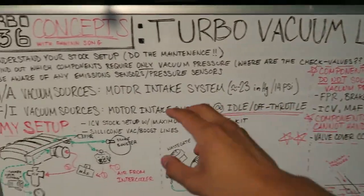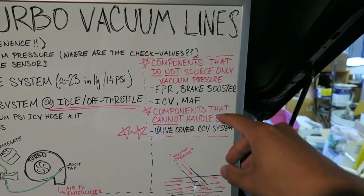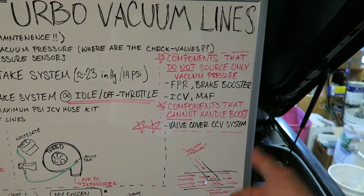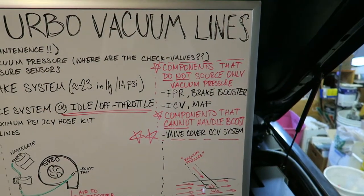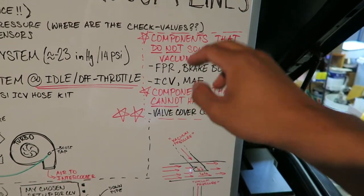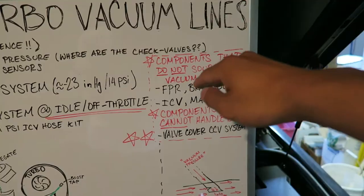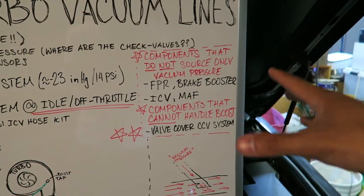Going off of what I just said about forced induction systems versus NA motors, these are the components that do not source only vacuum pressure, meaning they either have a check valve or you can boost these components. So the fuel pressure regulator, the brake booster, the idle control valve, and your MAF setup can be hooked up just like they are in a stock setup. Under boost, these four things will not be affected.